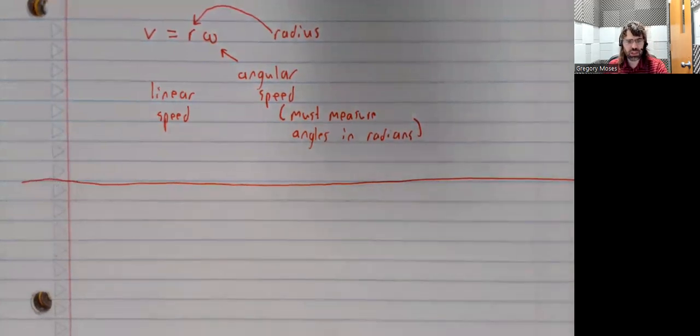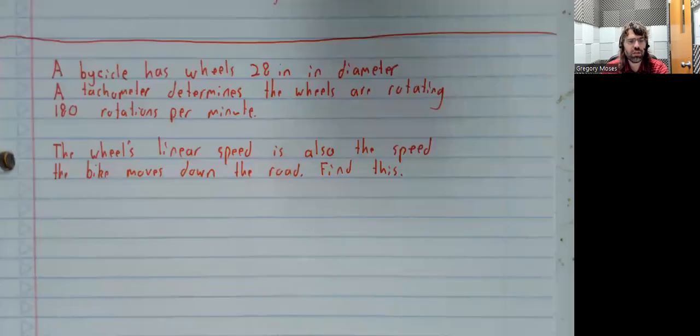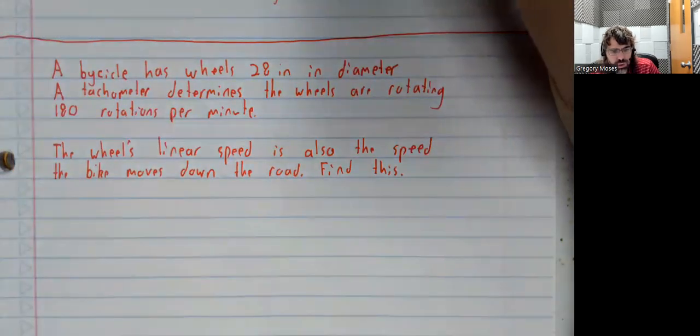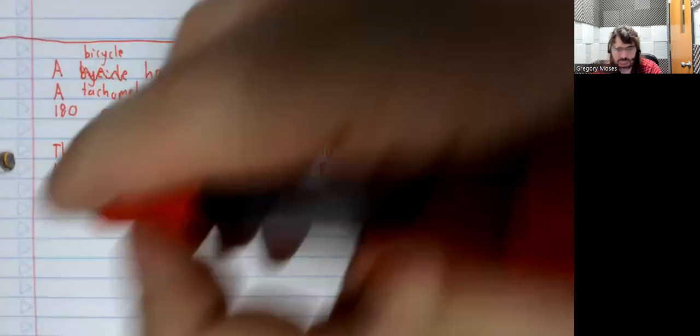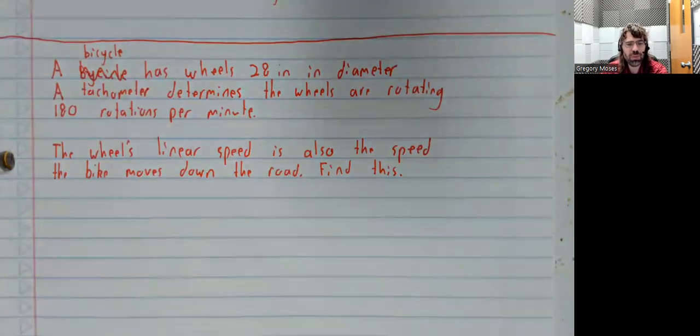And now let's do an example, a slightly intricate example. Let's say a bicycle has wheels 28 inches in diameter. And the wheels are rotating 180 rotations per minute.